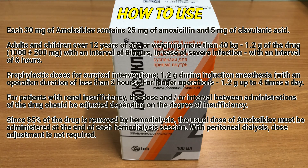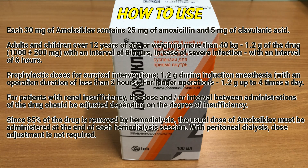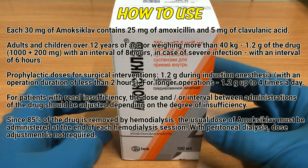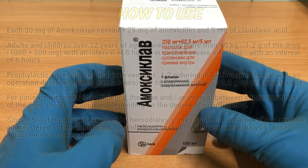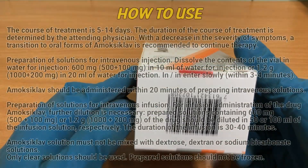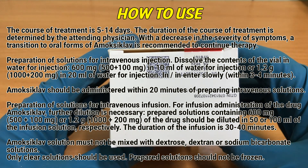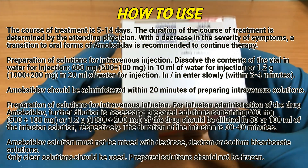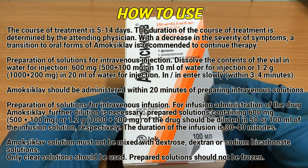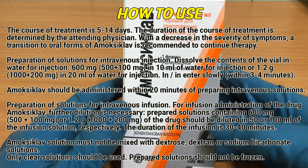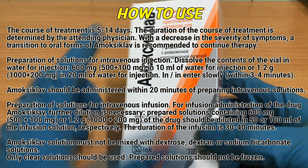For patients with renal insufficiency, the dosing or interval between administration of the drug should be adjusted depending on the degree of insufficiency. Since 85% of the drug is removed by hemodialysis, the usual dose of amoxicillin must be administered at the end of each hemodialysis session. With peritoneal dialysis, dose adjustment is not required. The course of treatment is 5 to 14 days, as determined by the attending physician. With a decrease in the severity of symptoms, a transition to oral forms of amoxicillin is recommended.